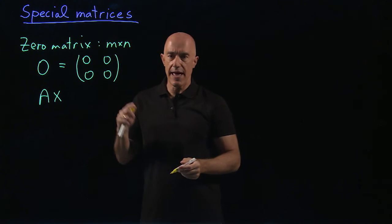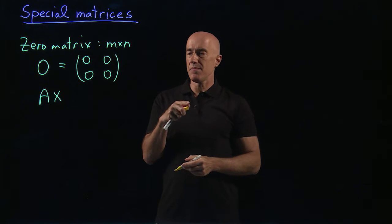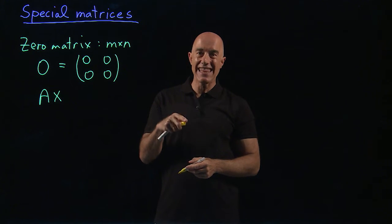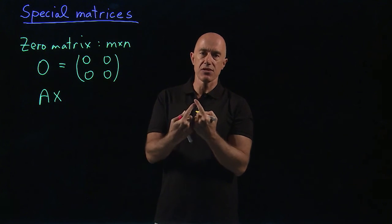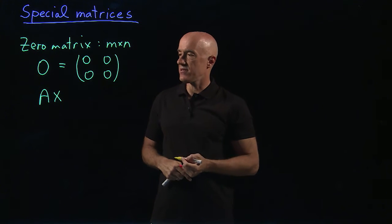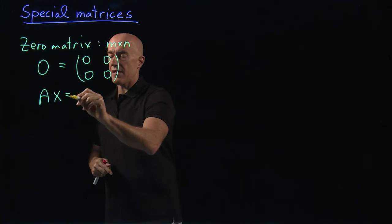So A can be an m by n matrix and then x can be a column vector, m by n. So that means a column vector must be n by 1. You have to match the sizes of the matrix.